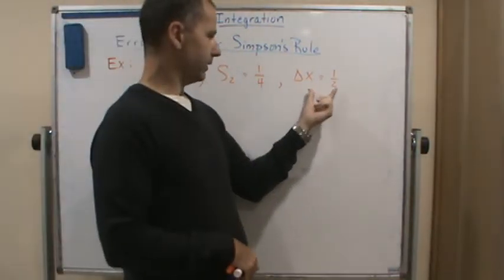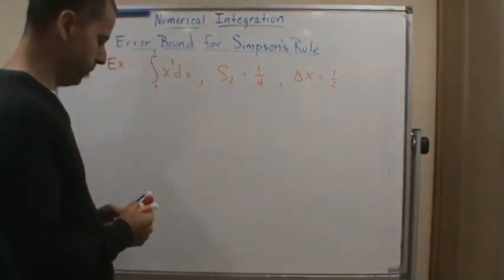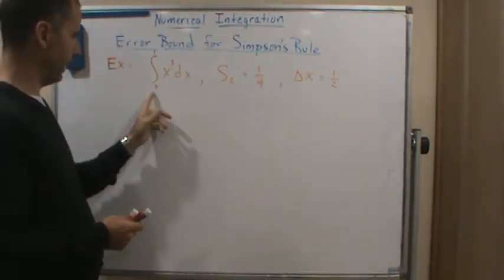And again, we had delta x equal to 1, n equal to 2.